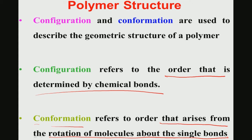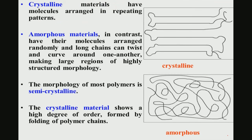Conformation is much more commonly used to describe protein structure, since it refers to the arrangement arising from rotation of molecules around single bonds. Crystalline polymers have all chains perfectly parallel to each other, while amorphous polymers have chains oriented in a very random manner with no regular arrangement.